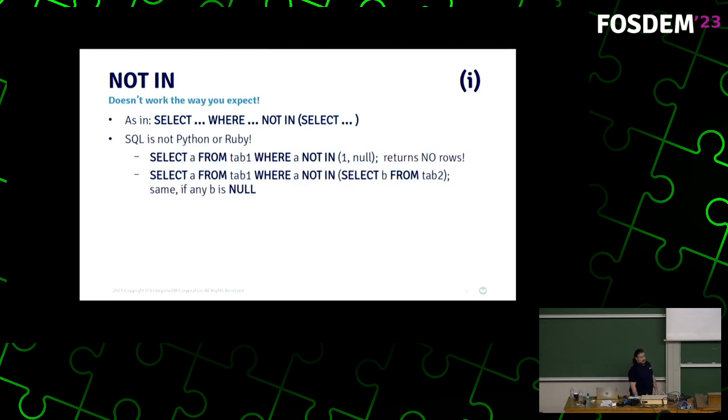As in the boolean, not in, right? It doesn't work the way you expect it to. So, when you're writing select something where something else is not in this subquery, you have to keep in mind that SQL and Postgres by extension is not Python and it's not Ruby. So it doesn't behave the way you expect it to if you're used to writing not in booleans in programming languages. So, select A from table 1 where A not in, 1 constant, right? So it's always true. And null returns nothing because if you perform a not in and there's even one null, the result is null.